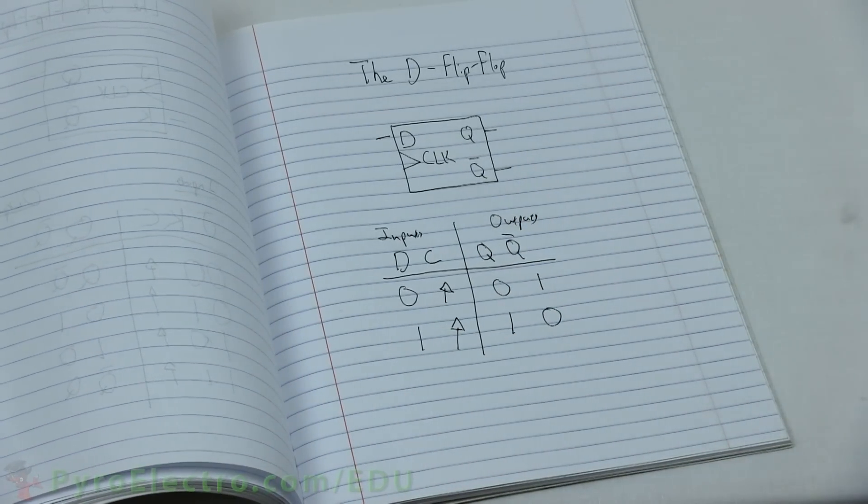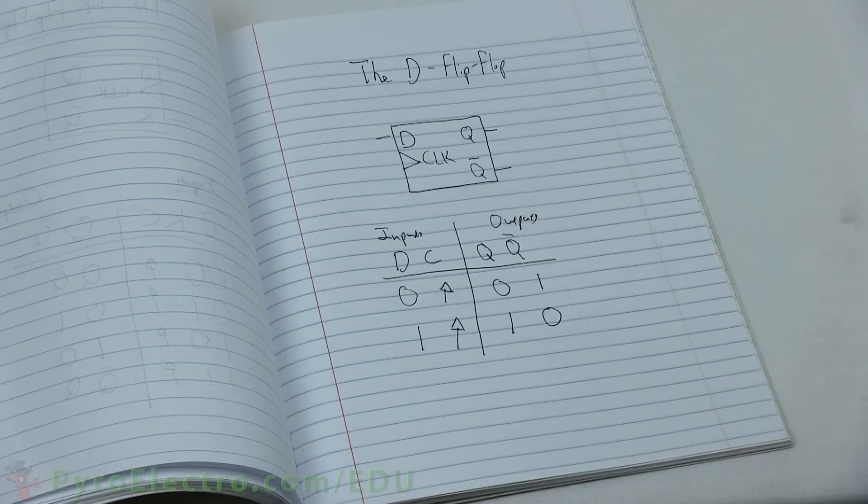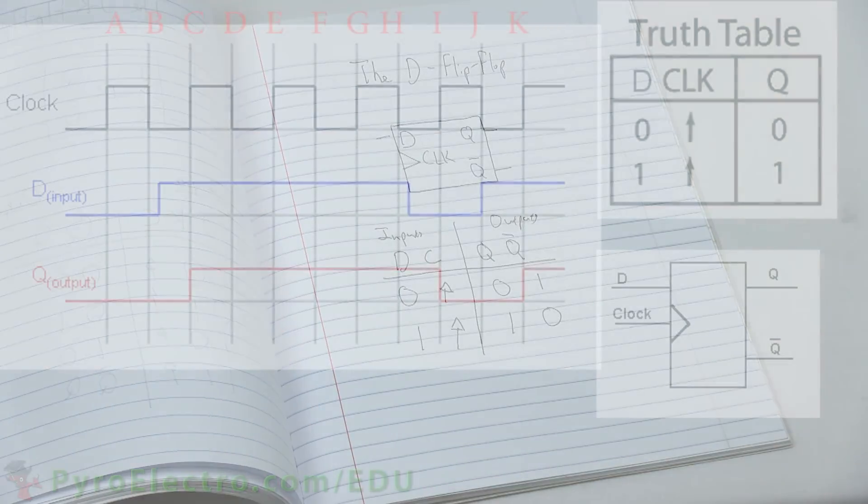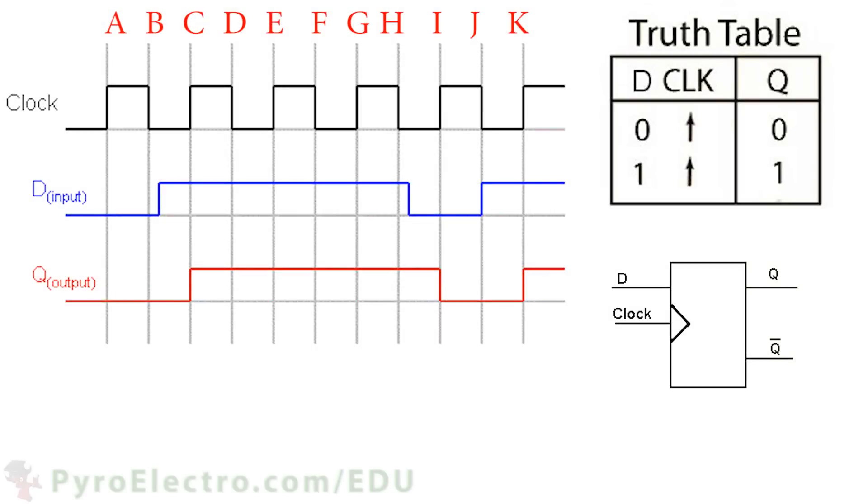Any other state, such as the clock remaining steady at logic 1 or logic 0, will not change the output. Only a clock transition from logic 0 to logic 1 will allow any change in output on the flip-flop. Finally, we must look at the timing diagram of the D flip-flop to cement in our understanding of how this thing works. The flip-flop only changes its output when the clock signal changes from logic 0 to logic 1, as you can see at these points.